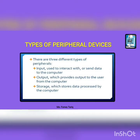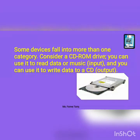There are three types of peripheral devices: input, output, and storage, as these three are the most common operations that need to be performed. The input devices help us interact with the computer or send data to the computer. Output devices help us produce results, whereas storage devices are used to store processed data. But there are some devices that fall into more than one category. Consider a CD-ROM drive. You can use it to read data or music and you can use it to write data to a CD.